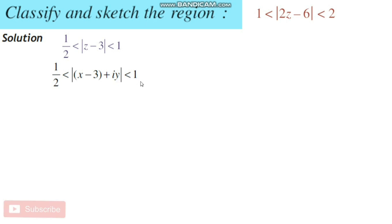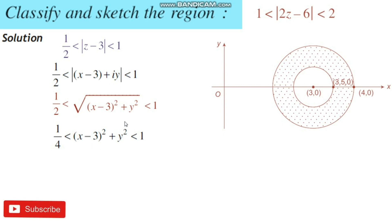We know that the modulus of the complex number is square root of (x minus 3) squared plus y squared. To identify the rough sketch of the region and its classification, squaring the entire relation, we get 1/4 less than (x minus 3) squared plus y squared less than 1. Now we can prescribe two circles with same center.